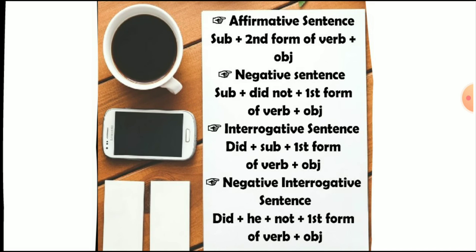For the affirmative sentence, we use: subject plus second form of verb plus object. The subject can be he, she, it, I, we, they, or you. For example, the word 'work' will be converted to its second form, plus object. The object can be 'garden' or 'football'.